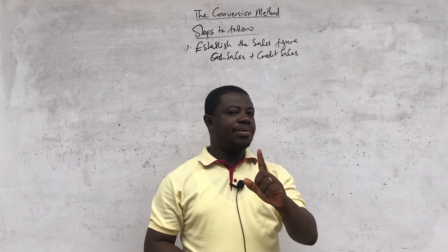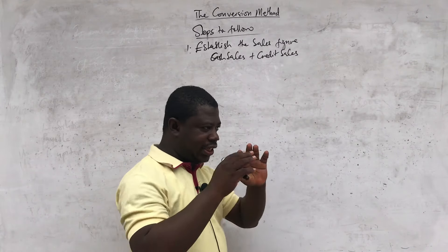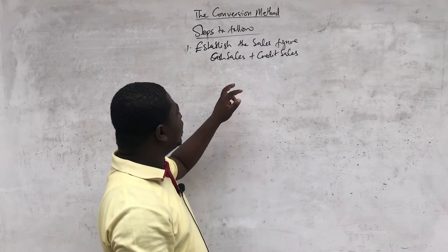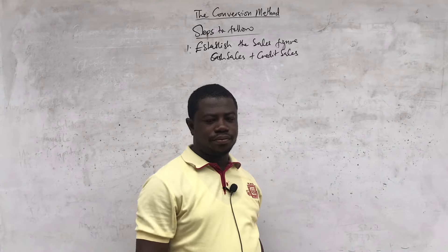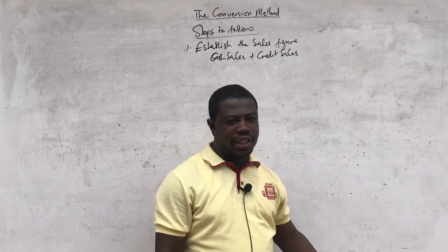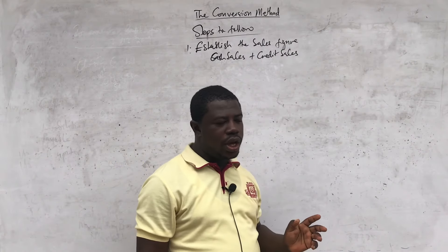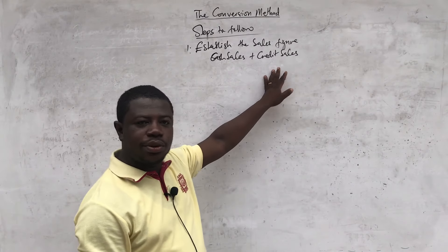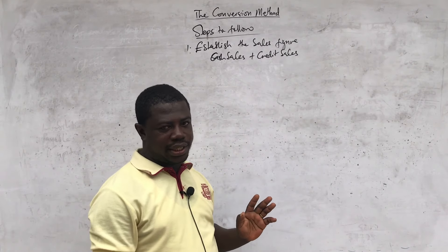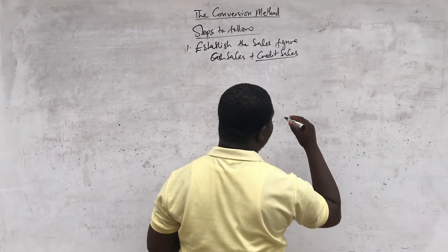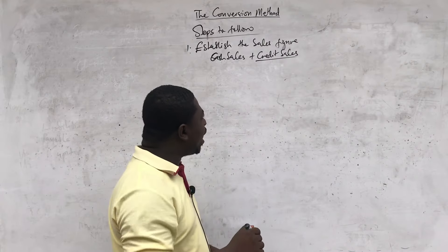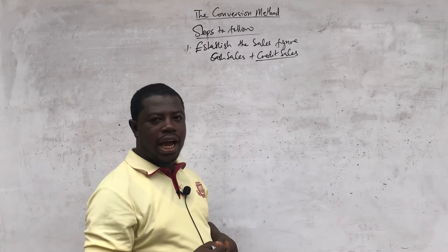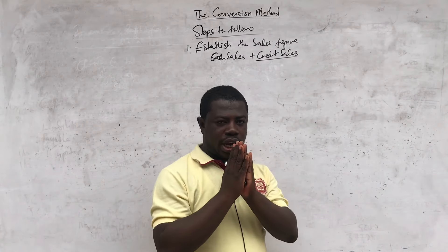Take note very carefully. The main thing to do is to establish your total sales, which is a combination of cash sales and credit sales. The cash sales may be given to you most of the time, or some questions may not give cash sales at all. If there is no cash sales, whatever amount you arrive at for credit sales, you take it as total sales. But the focus is how to establish the credit sales — you need to prepare a control account.